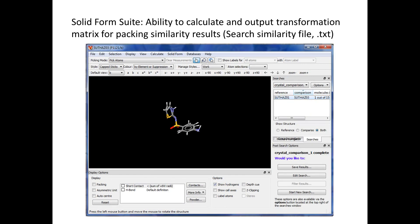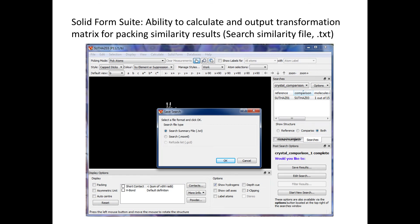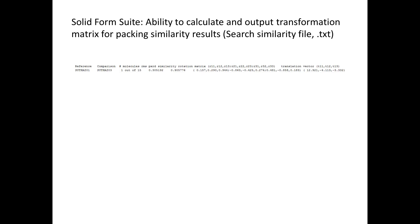What you get is the resulting two structures superimposed on each other to compare the packing. If you want to save those results, you click on save results and you have the option to save as a search summary file. This search summary file is the format you get for packing similarity results.